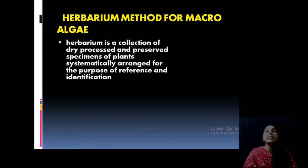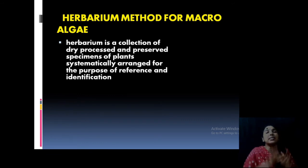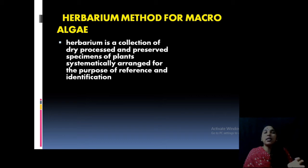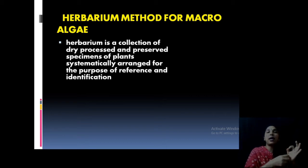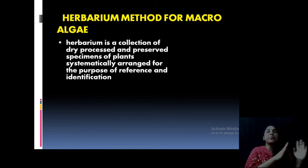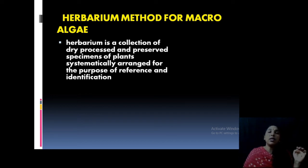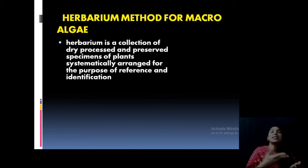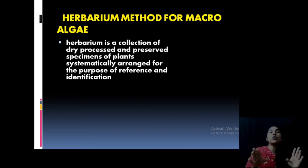What is a herbarium? It is a collection of dry, processed, preserved specimens systematically arranged for reference and identification. Usually this is done with plants: when you collect a plant, you dry it, press it, paste it in a sheet of paper, write everything regarding the plant, and keep it in a herbarium box in your institution. Later, many years after, a scientist can check the herbarium, look into the report and specimens, and identify the plant. The same method can also be used in the case of algae.